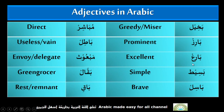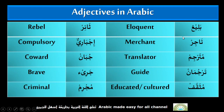Barizun — Prominent. Baria — Excellent. Basit — Simple. Basil — Brave. Mubashir — Direct. Batil — Useless. Mabahuj — Envoy, Delegate. Baqal — Greengrocer. Baqin — Rest, Remnant. Balih — Eloquent. Tajir — Merchant. Mutarjim — Translator. Tarjuman — Guide. Mosav — Educated, Cultured.